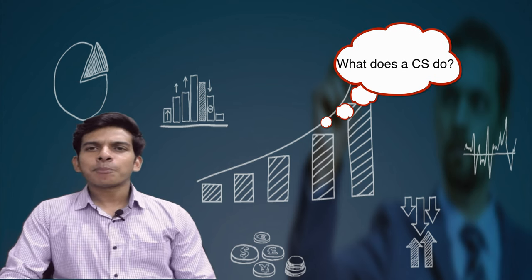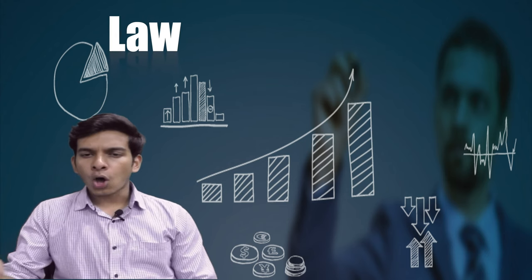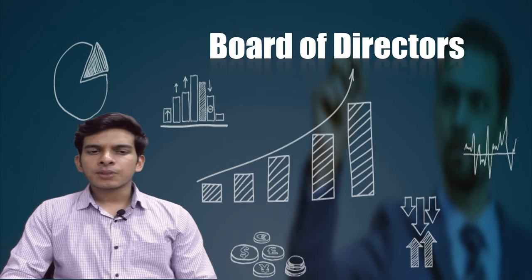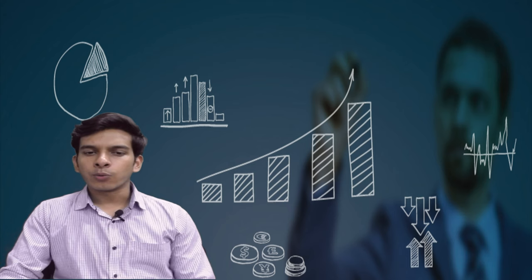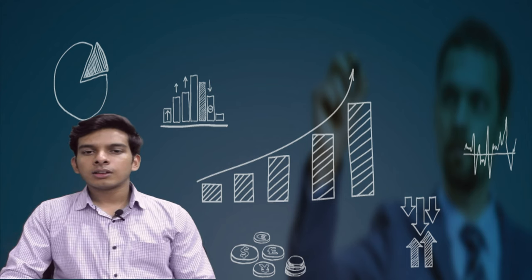What does a company secretary do? In simple words, the main function of a CS is to act as the mediator between the law, the company and the board of directors. A CS also gives advice to the board on how to make use of their duties and responsibilities within the law.